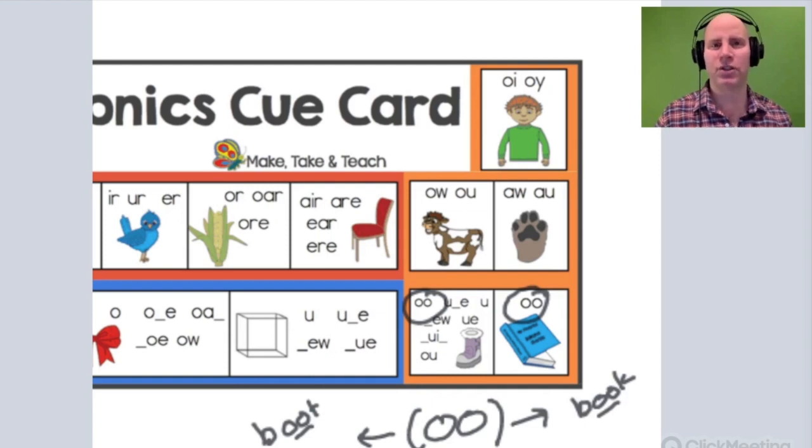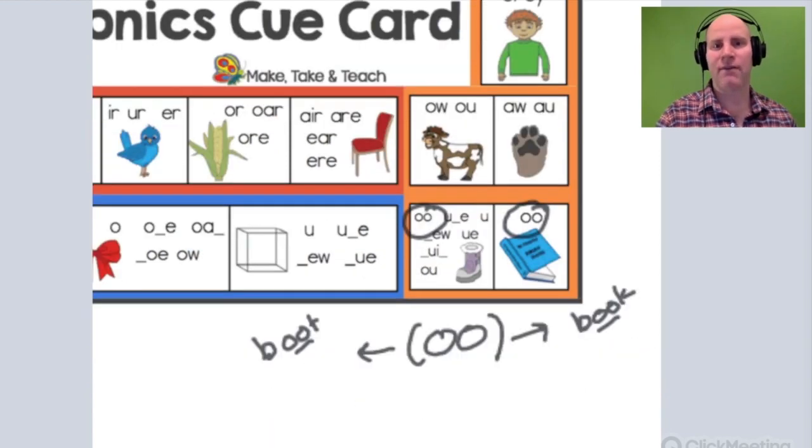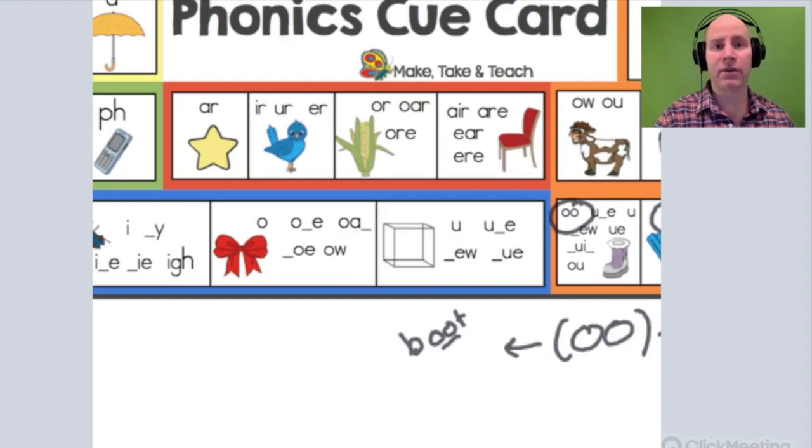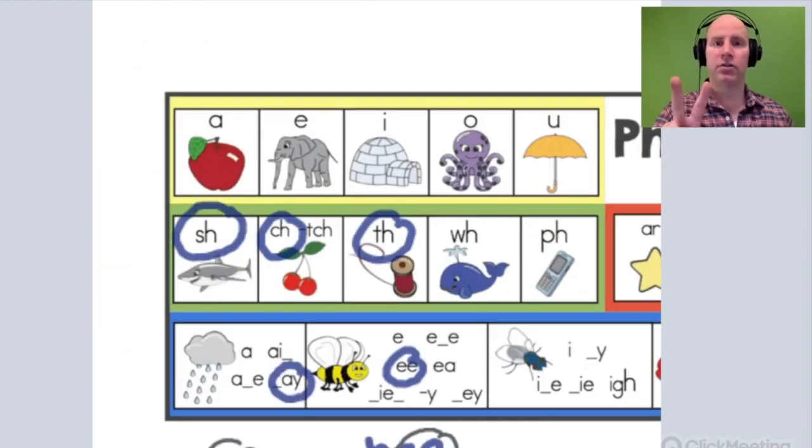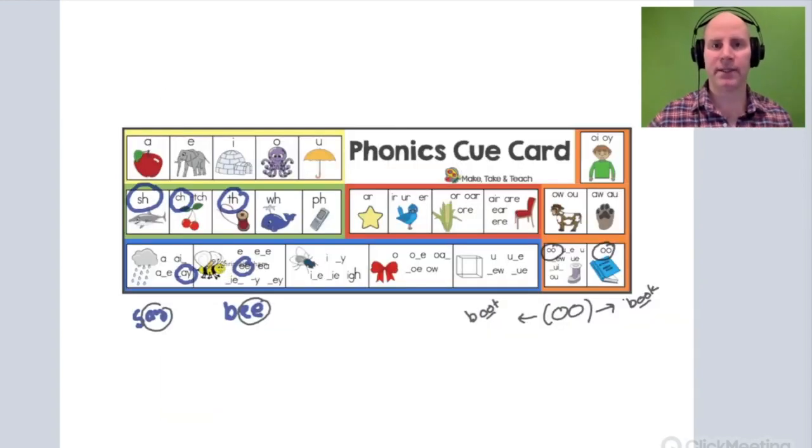Okay, so what you want to do is you want to stick with the basics on this, okay? So we have vowel digraphs. Vowel digraphs are two vowels that make one sound. Consonant digraphs are two consonants that make one sound. So you want to stick with the basics.